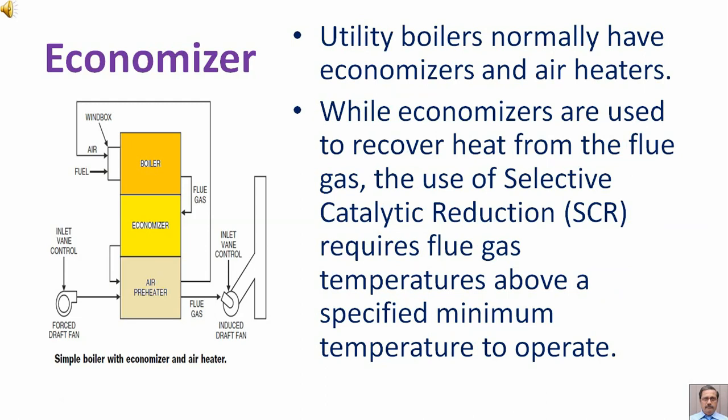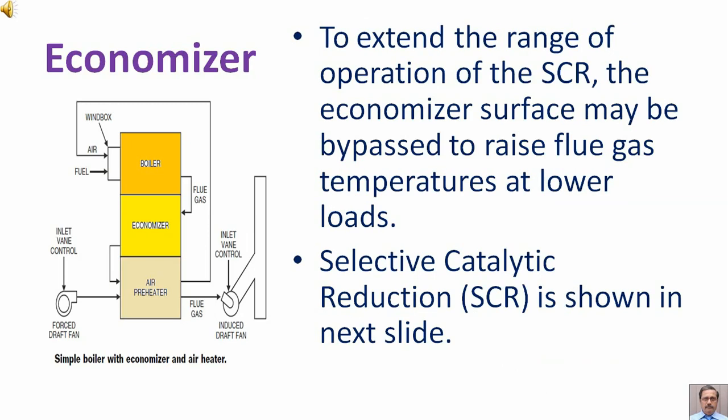While economizers are used to recover heat from the flue gas, the use of selective catalytic reduction (SCR) requires a flue gas temperature above a specified minimum temperature to operate. To extend the range of operation of the SCR, the economizer surface may be bypassed to raise flue gas temperature at lower loads. Selective catalytic reduction SCR is shown in the next slide.